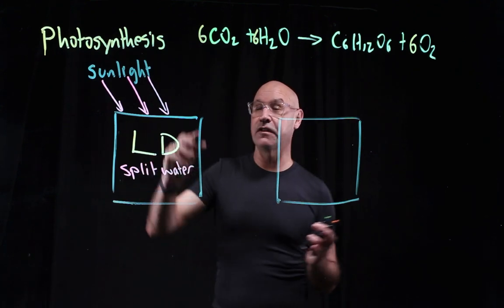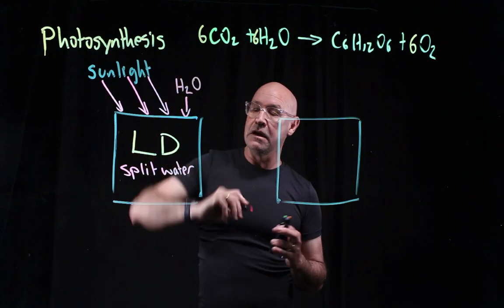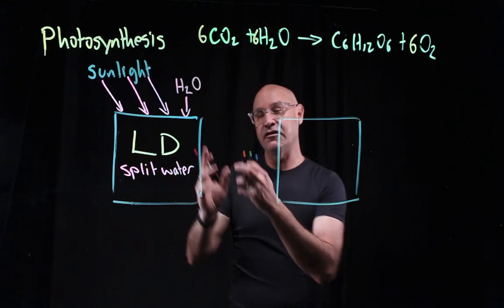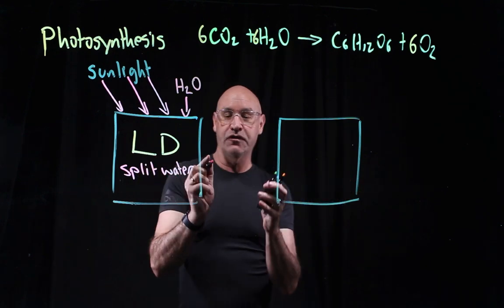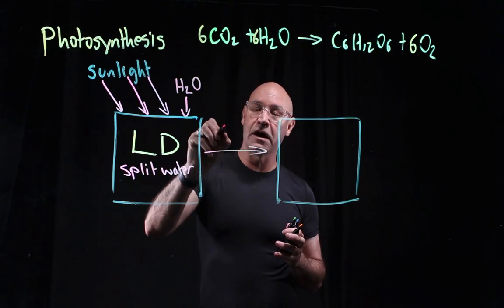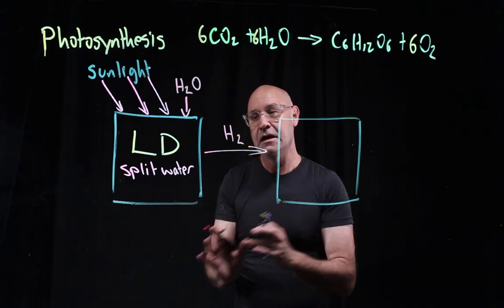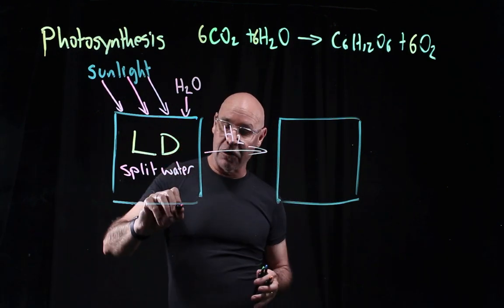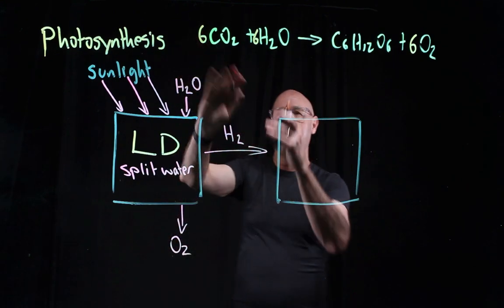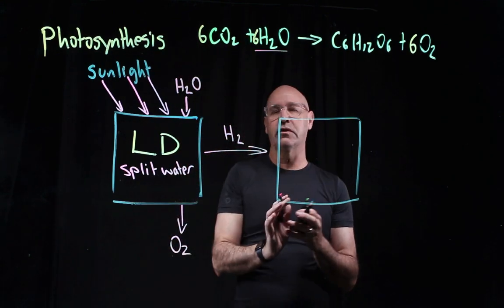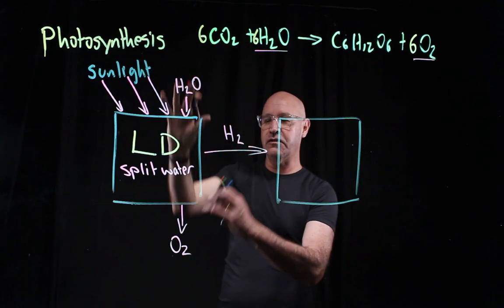So that means one of the inputs is water. Split water - splitting it into hydrogen and oxygen. The hydrogen is actually required for the second half of photosynthesis, but the oxygen is not. So oxygen is an output. One of the inputs was water and one of the outputs is oxygen.